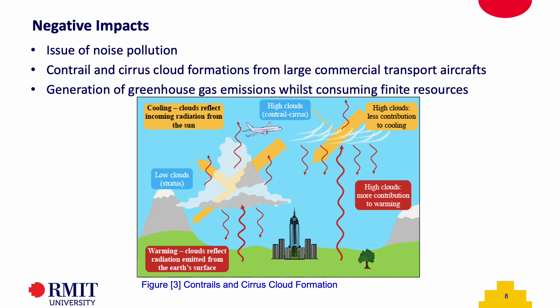Environmental impacts are also caused by contrails and cirrus cloud formations from large commercial aircrafts. Contrails are formed from engine exhaust condensation, freezing up at the high altitudes that large commercial aircrafts often fly at. Over time, they become indistinguishable from cirrus clouds. Contrails' radiative forcing attributes to cooling and heating, as they reflect sunlight and emit most heat back to earth, respectively, contributing to global warming.